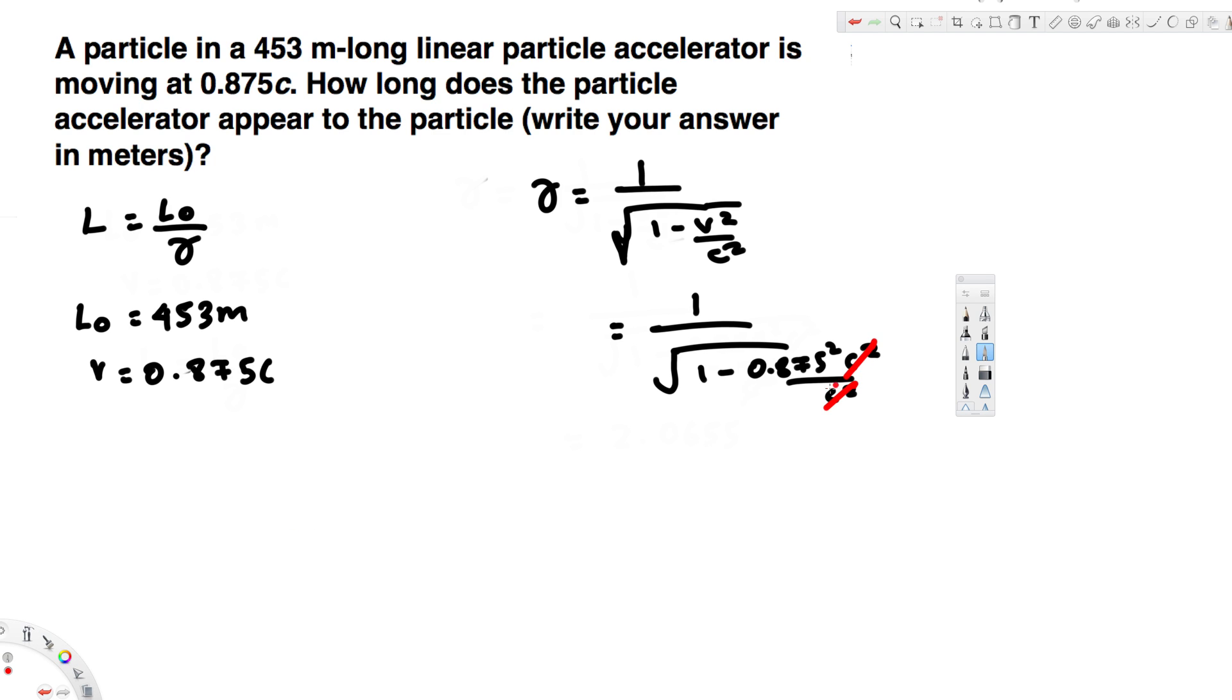If you calculate this one, you will get 2.0655. Let's go ahead and plug it in this equation: L equals L₀ divided by the Lorentz factor. L₀ is given by 453 divided by 2.0655.